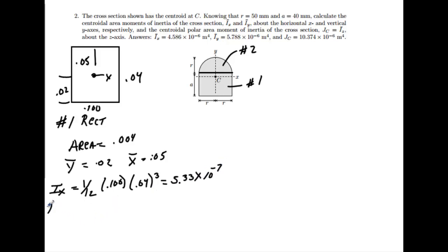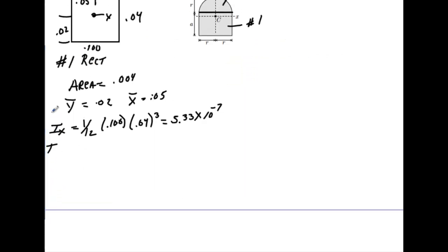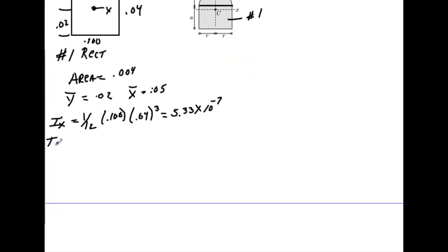Now do the same thing for the Iy. When we do that, we'll get 1/12 times the base, now it's .04 times .100, we will cube that. That gives me 3.33 times 10 to the minus 6.